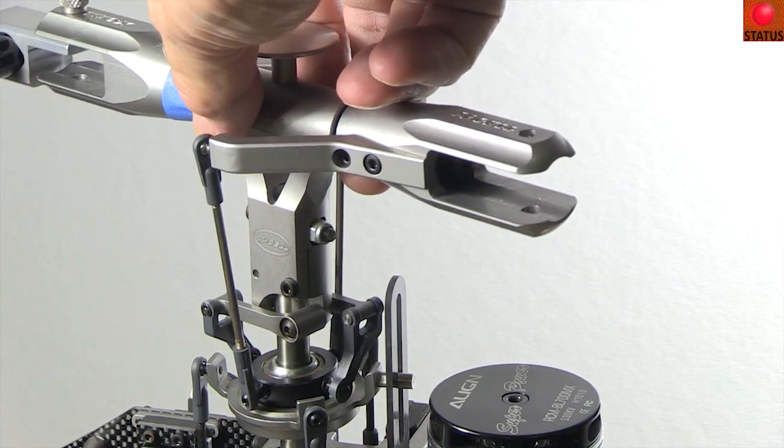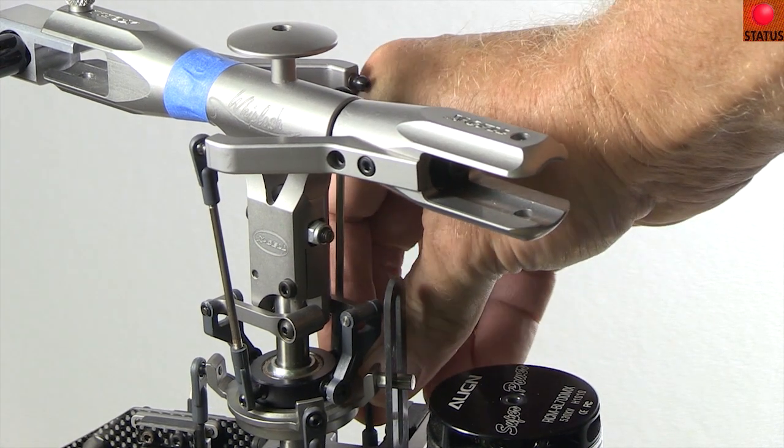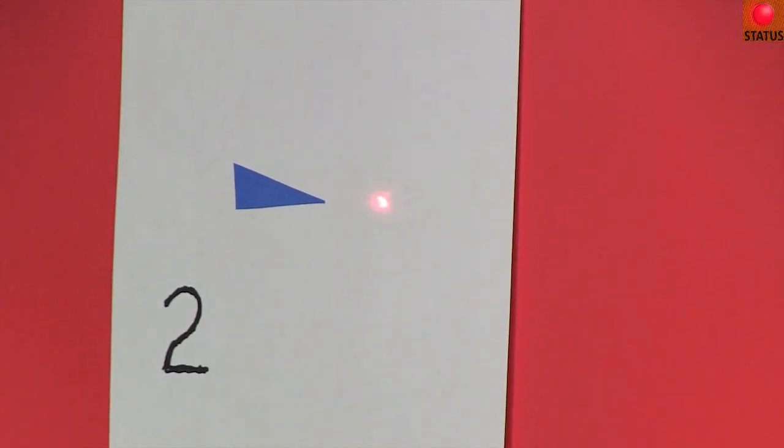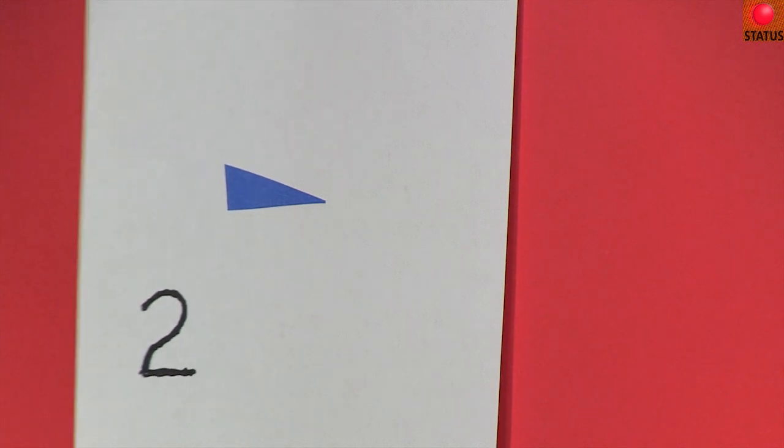Now rotate the head so the same inner ball is lined up with the red servo. Mark that position. When we're done, we'll have three marks on the wall on a plane exactly perpendicular to the main shaft.